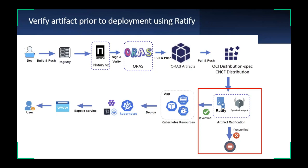In our previous two demos, we generated signatures for our sample image and attached an SBOM file to that image. Last but not least, how do we verify artifact security prior to deploying it to a Kubernetes cluster? I think Ratify is the answer. We can use Ratify to enable Kubernetes clusters to verify artifacts prior to deployment. Ratify can work with OPA Gatekeeper to enable policy to check and validate if the container image meets our verification policy.